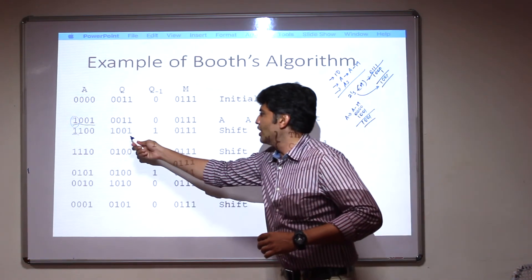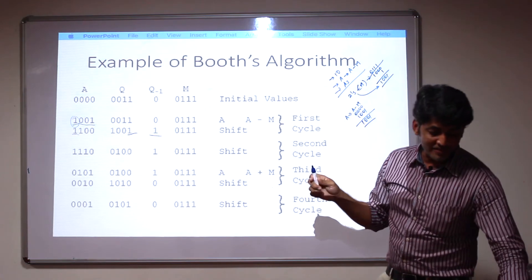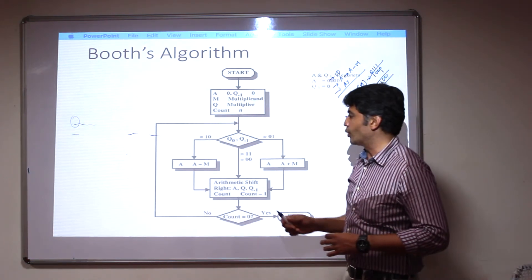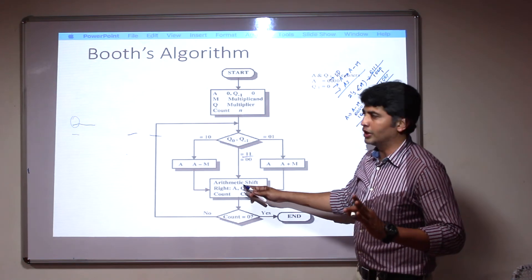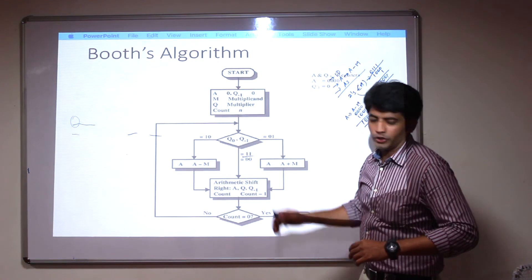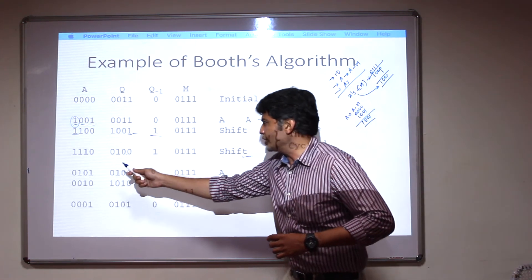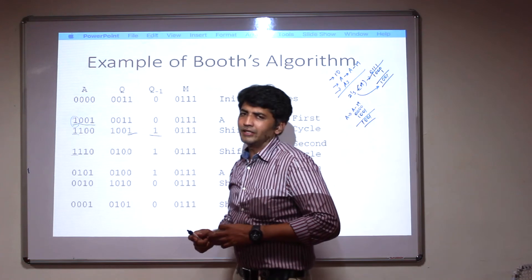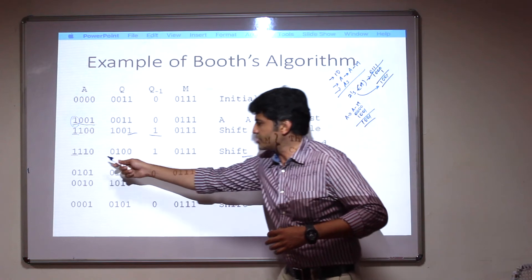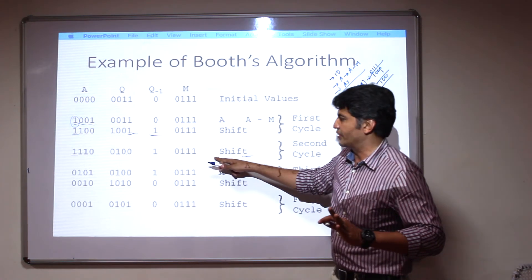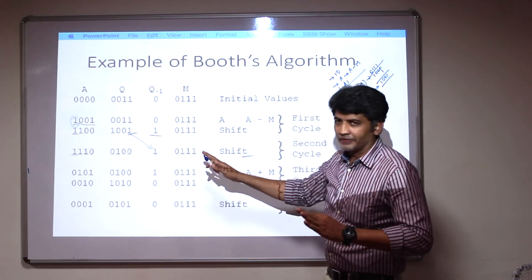In the second step, we again verify Q0 and Q-minus-1. The values are 1,1. Checking the flowchart: if the value 1,1 is coming, you only need to do one operation — arithmetic shift. So here we are doing the arithmetic shift, preserving the most significant bit to represent the sign magnitude. This is the difference here after the second step.